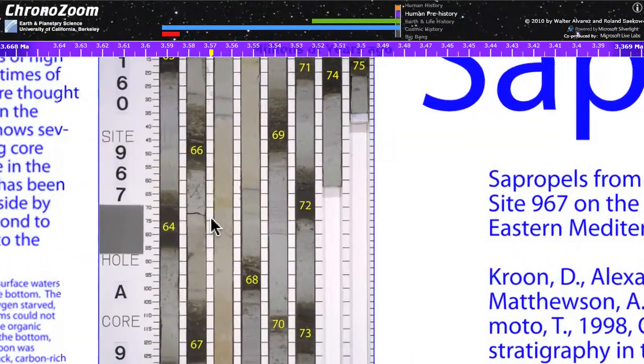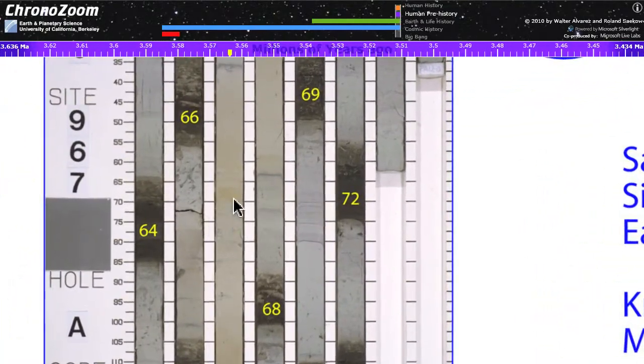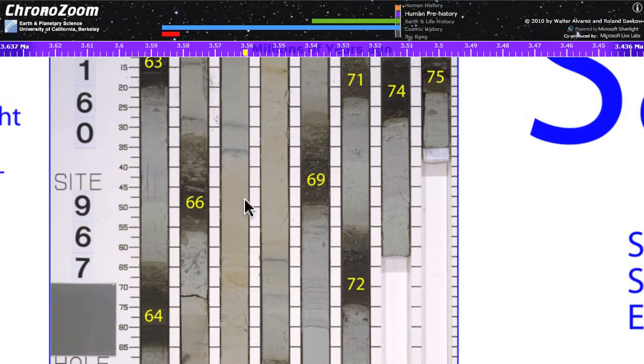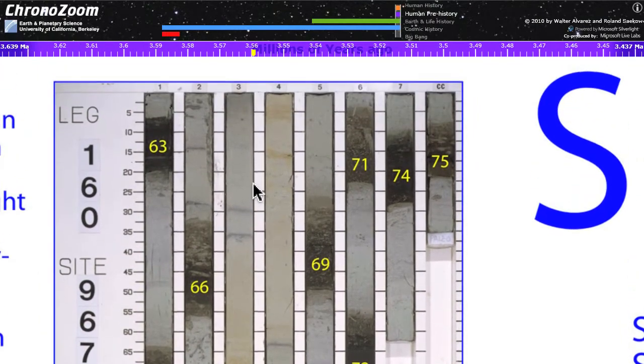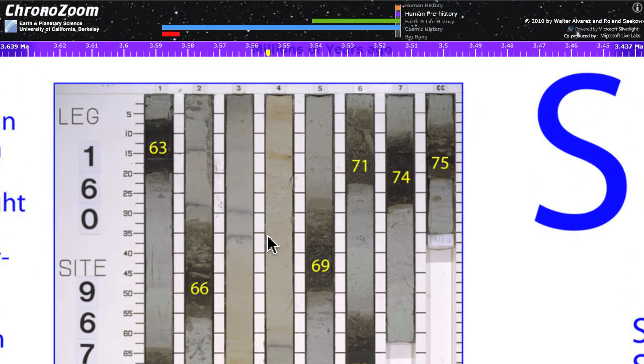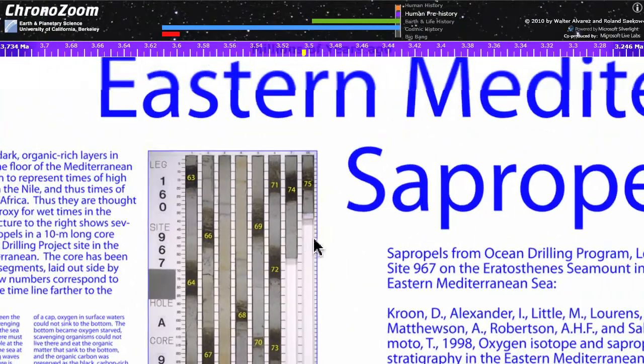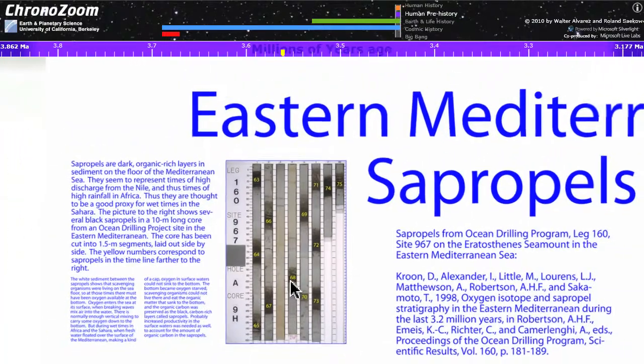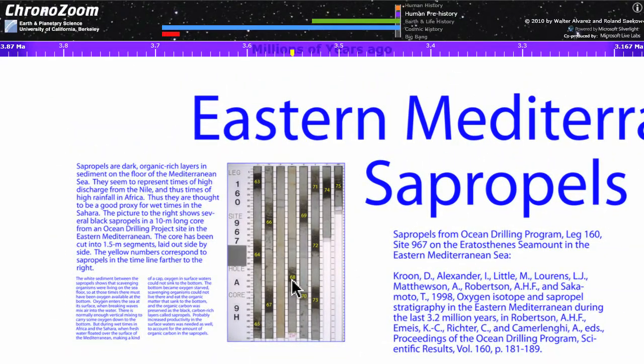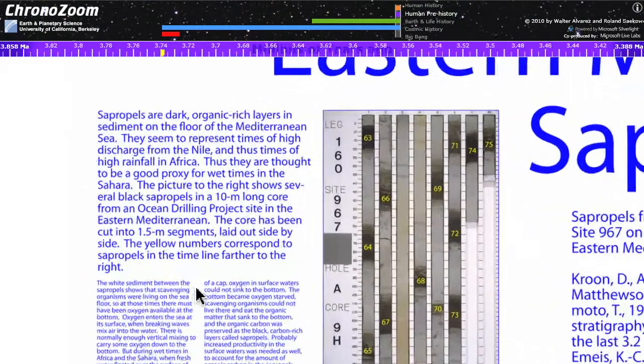This is a long core of the sediment drilled by the drilling ship and the core has been cut into several different segments. The dark areas are sapropels and they've all been numbered there so that you can see the names or the numbers of them. You can zoom in on different portions here of the text and read about them.